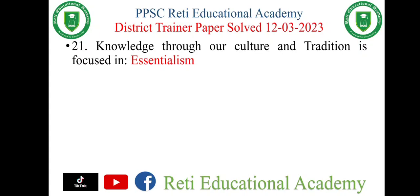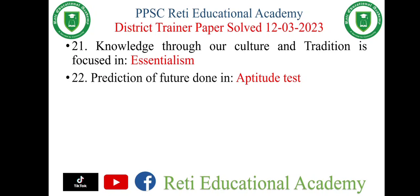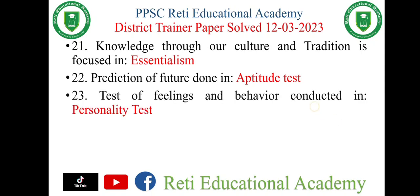Question number twenty-one: knowledge through our culture and traditions is focused in essentialism, as they consider it essential to learn our culture and traditions. Question number twenty-two: prediction of future ability to cope up with the challenges of study is measured in aptitude tests. Question number twenty-three: test of feelings and behavior is conducted through a personality test.